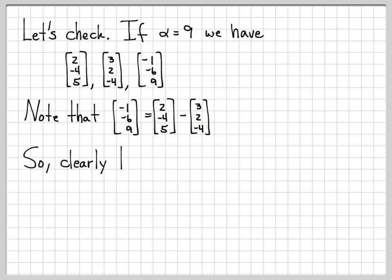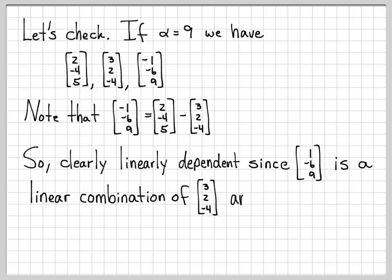So I can write one of these vectors, the third one, as a linear combination of the other two vectors. So that means the third vector, when alpha equals 9, is linearly dependent on the other two vectors, because that's what it means to be linearly dependent. You can write it as a linear combination of the other things.